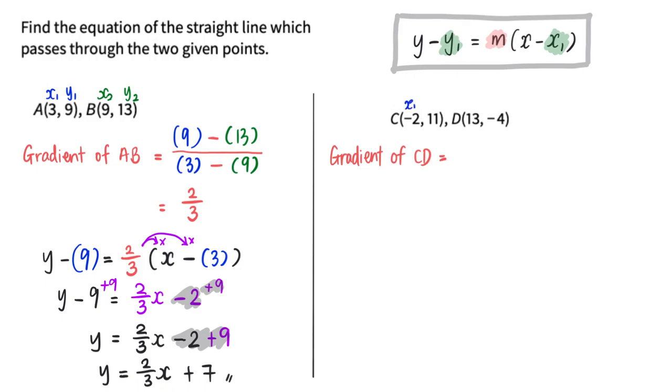I will have my x1, y1, x2, y2. That's 11 minus negative 4 over negative 2 minus 13. This will give me a value of negative 1.